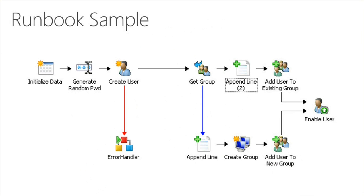Here is a sample of how a runbook can look. It's a simple example, but you get the idea. You have a graphical user interface provided by the runbook designer, and you're able to grab activities from the toolbox, place them on the surface, and use links to connect those activities together. On the left is the initialized data activity where you define the parameters used by that runbook.